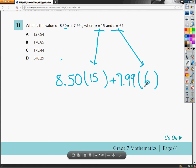I typed it all into my handy-dandy calculator here, and I hit the enter button, and I got 175.44. And that is exactly the answer I'm looking for, because the answer to number 11 is, of course, C.